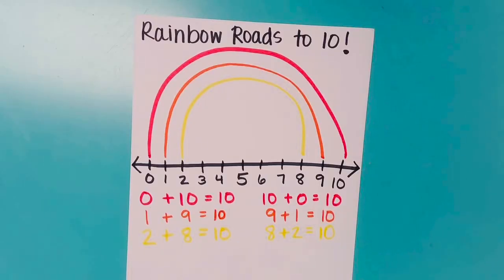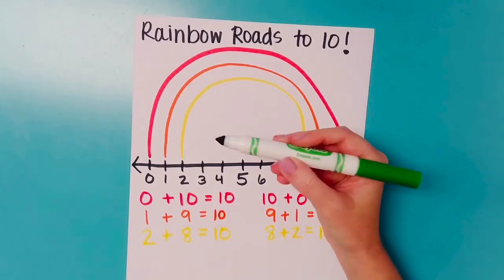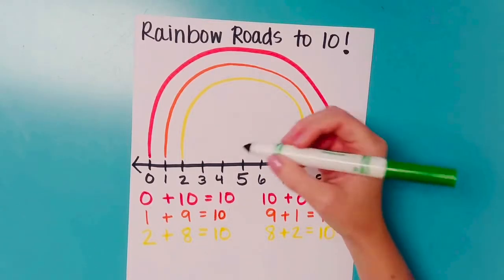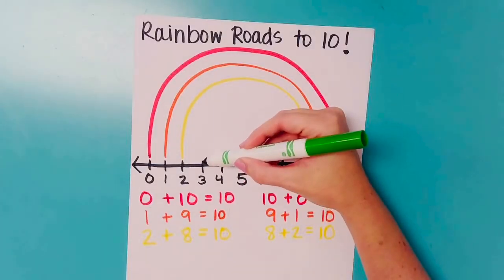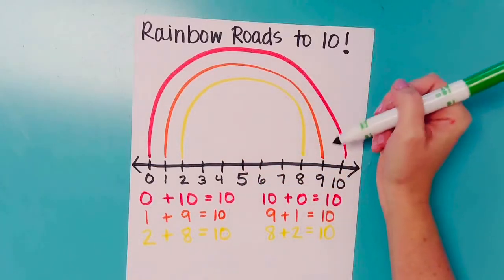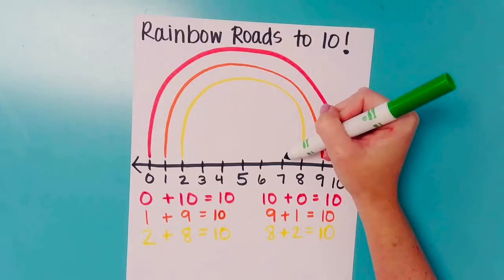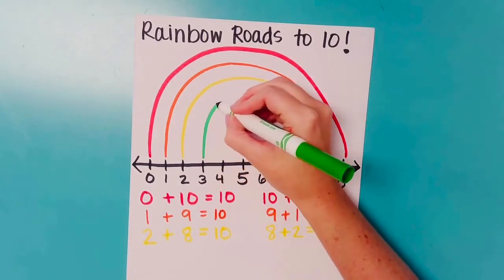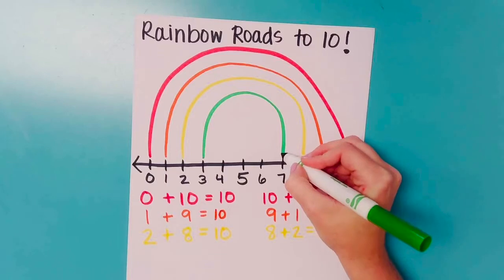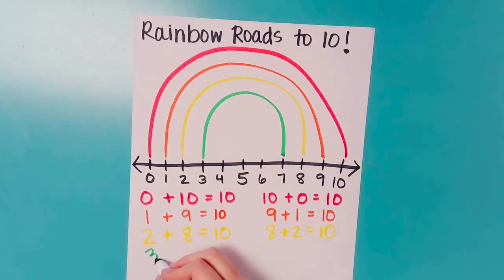And now what color? Green. Where are we going to start with green? At the 3. Where are we going to end with green? At the 7. 3 plus 7 equals 10. And let's flip it around and write the related fact. 7 plus 3 equals 10.